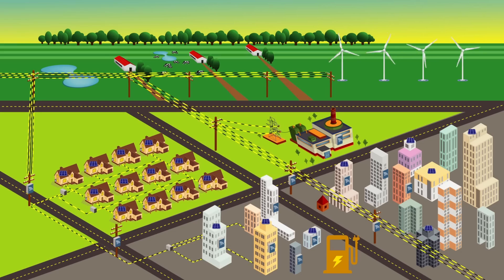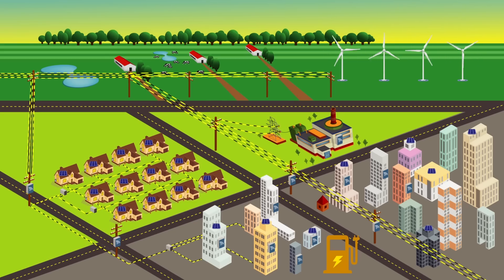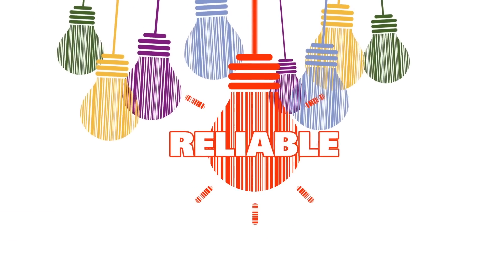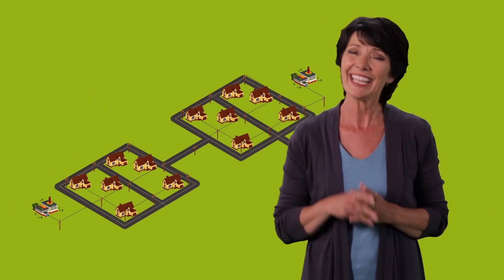Smart grid can accomplish some really amazing things, like doing a better job of keeping your lights on. The smart grid delivers power more consistently and can keep up with all of our gadgets.